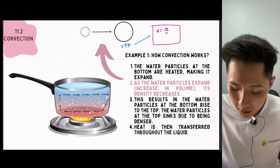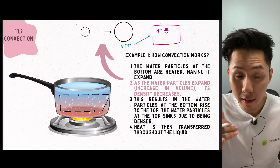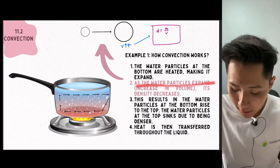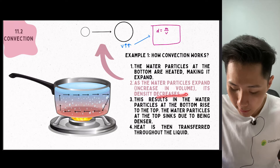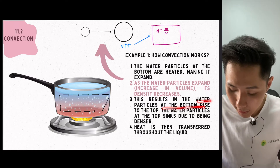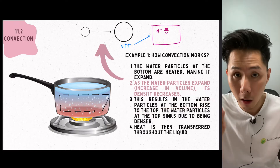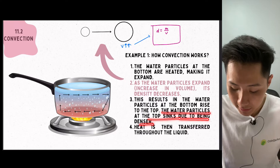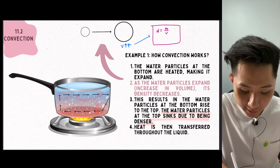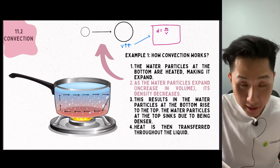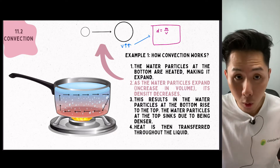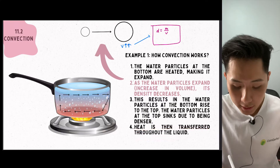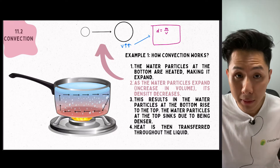Particles that are denser will sink and particles that are less dense will rise. As the water particles increase in volume, their density decreases, so water particles at the bottom rise to the top. The water particles at the top then sink due to being denser — meaning the colder water sinks and the hotter water rises. This causes the colder water to be heated again, and heat is then transferred throughout the liquid. That's how convection happens in liquid.